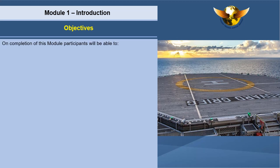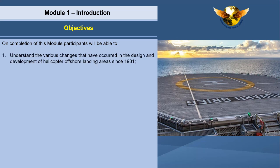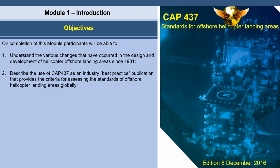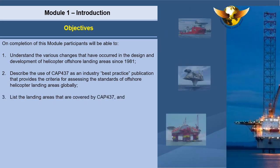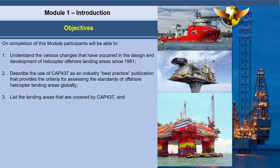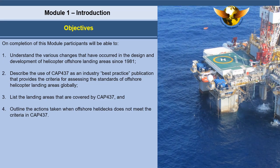On completion of this module, participants will be able to: understand the various changes that have occurred in the design and development of helicopter offshore landing areas since 1981; describe the use of CAP 437 as an industry best practice publication that provides the criteria for assessing the standards of offshore helicopter landing areas globally; list the landing areas covered by CAP 437; and outline the actions taken when offshore helidecks do not meet the criteria in CAP 437.